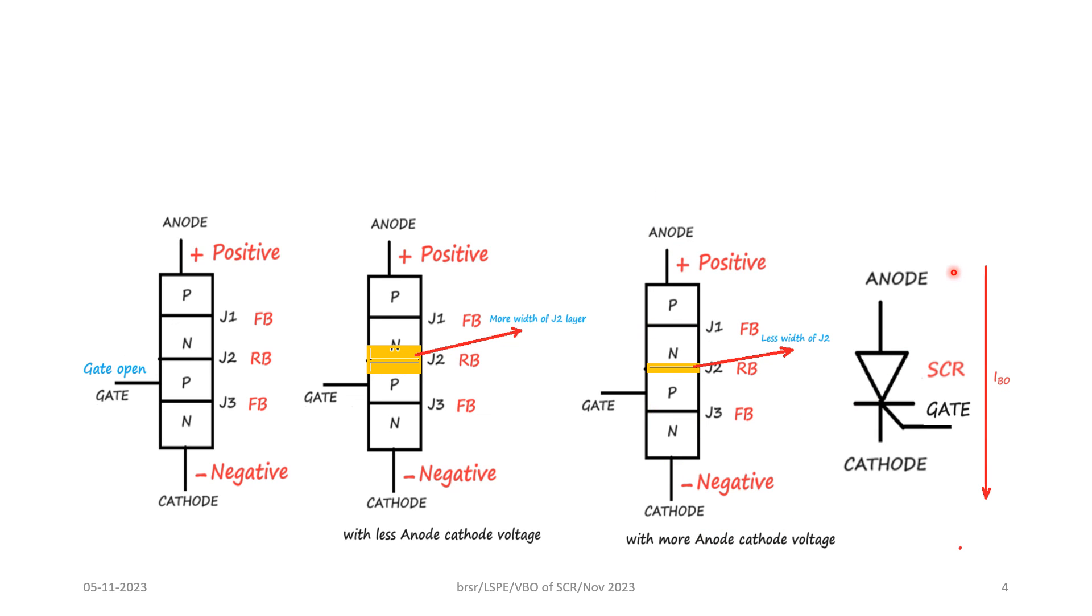So the voltage at which the breakdown of junction J2 occurs and the current flows from anode to cathode is called the forward breakover voltage.